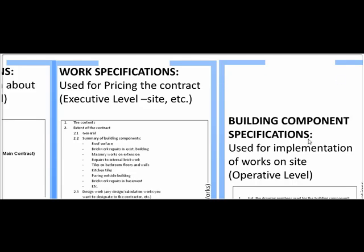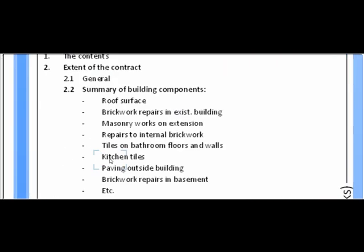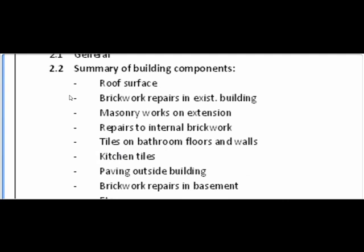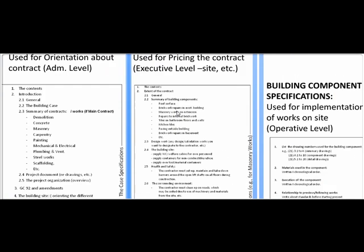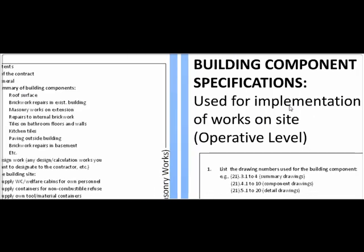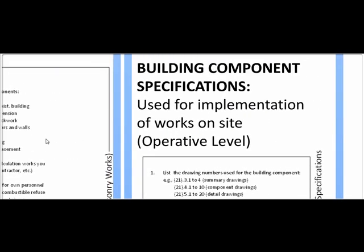We need to talk about the building component specifications. Going back to the work specifications, we had a summary of building components. For this particular contract, items such as roof surface, brickwork repairs, and masonry work on the extension are listed. Each one of these items has its own building component specification, which is chapter four of the work specifications.